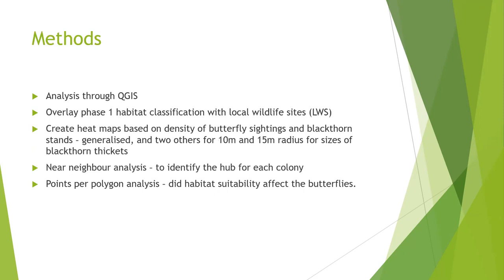The methods I used were analysis through QGIS. The first step was to overlay phase one habitat classification with local wildlife sites that TVERC had already identified as having some form of conservation interest. From this overlay map, I was able to plot the points of the butterflies and the blackthorn and create heat maps for their distributions. I created a generalised heat map showing the general concentrations of the points, and two others with a 10 metre and 15 metre radius for the points, representing the approximate size for the blackthorn thickets.